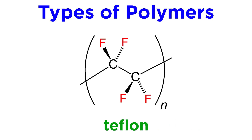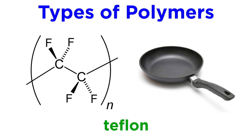If we replace the hydrogen atoms on ethene with fluorine atoms and then allow this to polymerize, we get a material called Teflon. This is what gives certain containers their non-stick coating, because the CF bonds are quite inert. They are almost entirely unreactive, making the material tough and non-flammable.